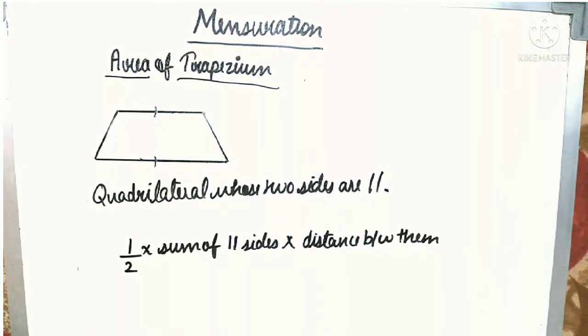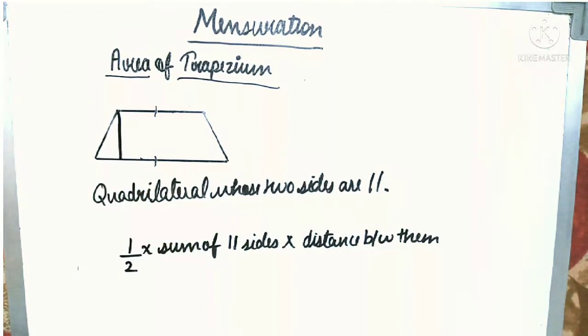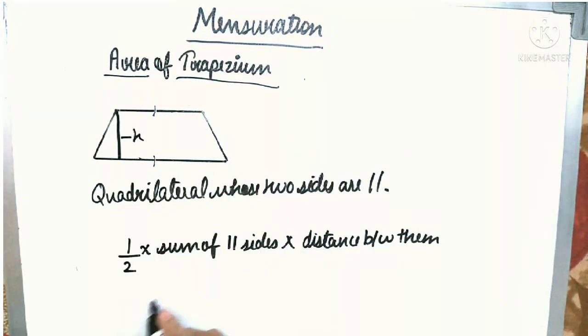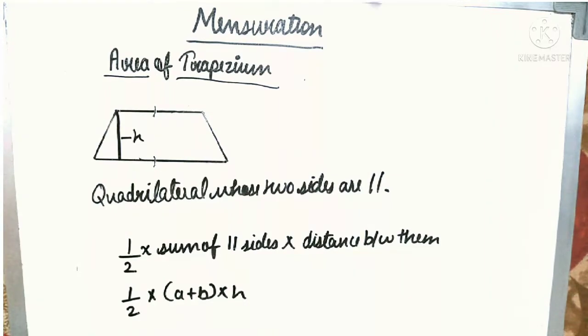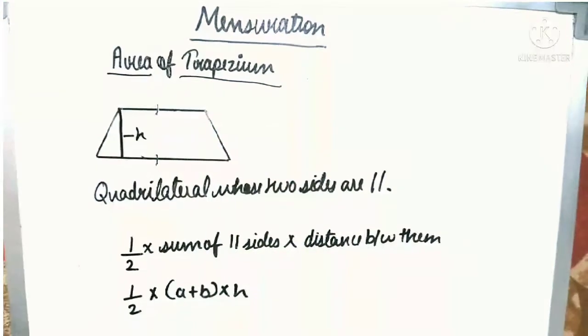What is the distance between them? You can say the distance between them as height. Here a line would be given to you. This line is the distance between them which is also known as h. So we can also write the formula of trapezium as half into (a + b) into h. In this case we have taken this side as a and this side as b.